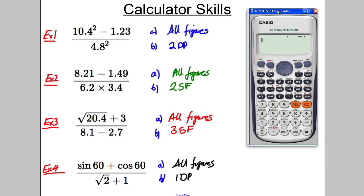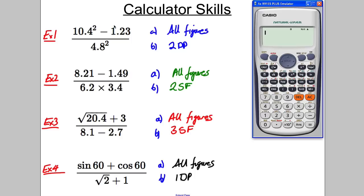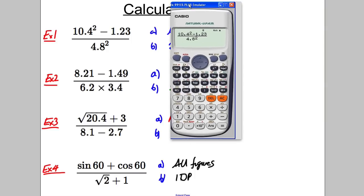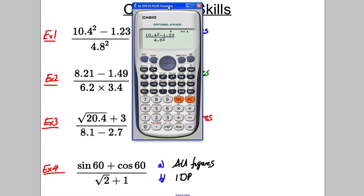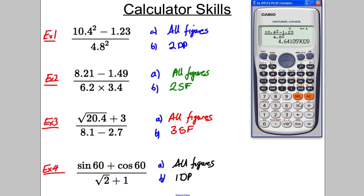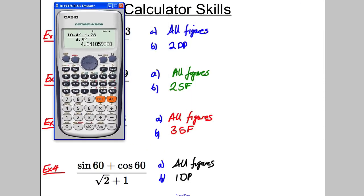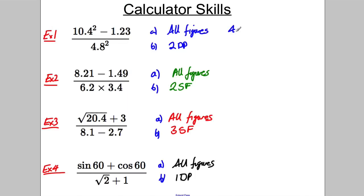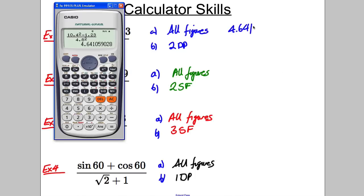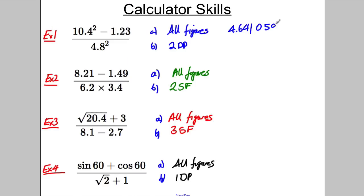Okay, calculator out. Important thing, you know how to use your own calculator. Let's use the fraction button. It makes it much easier. Then we type 10.4 squared, subtract 1.23, press the down to get on the bottom of the fraction, 4.8 squared. Before you press equals, put it right next to your question, check it looks the same, it does, and press equals. We're going to write down the answer 4.641059028.